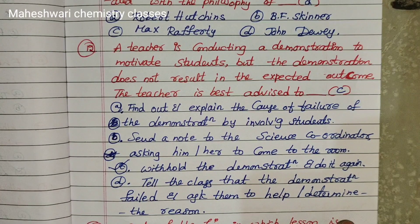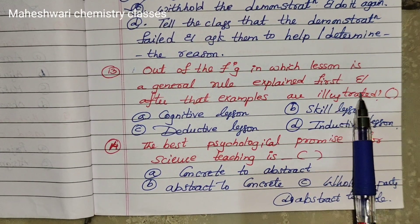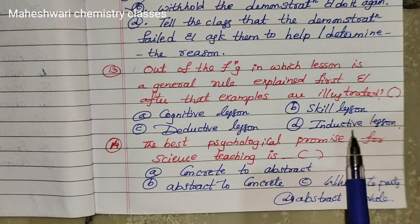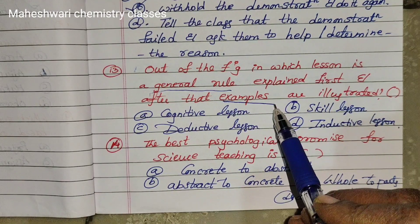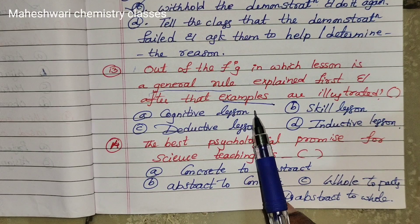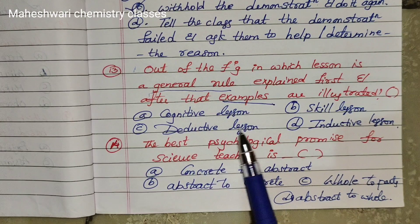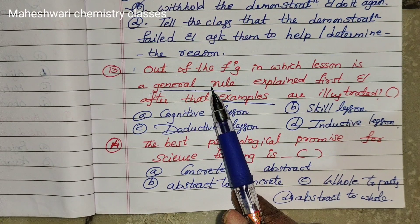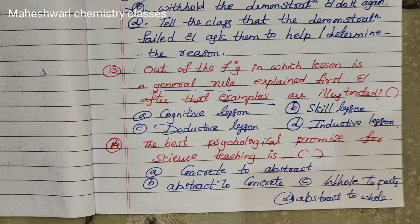Thirteenth question: In which lesson is a general rule explained first and then examples are illustrated? Options are Cognitive lesson, Skill lesson, Reductive lesson, Inductive lesson. If a rule is given first and then examples follow, that is the rule-to-example approach, which is the Deductive lesson. Thirteenth one is option C.